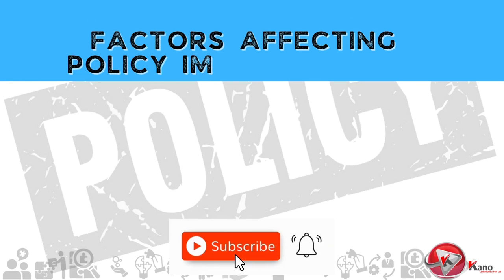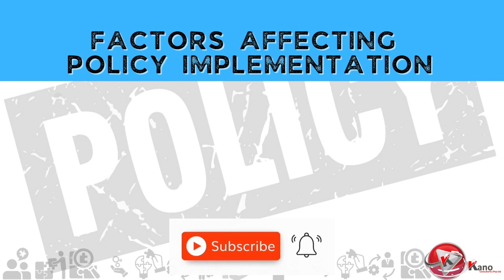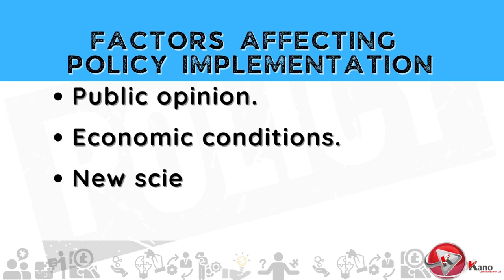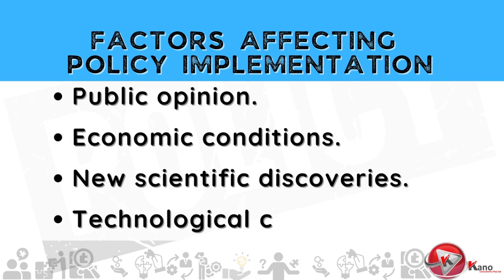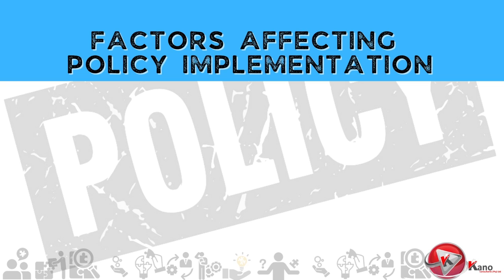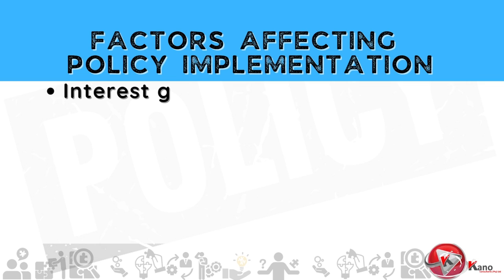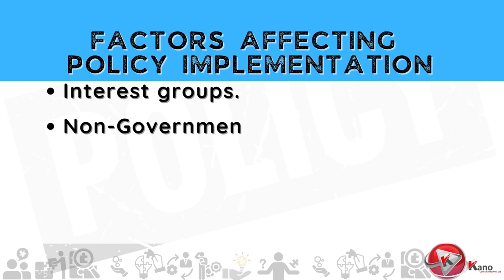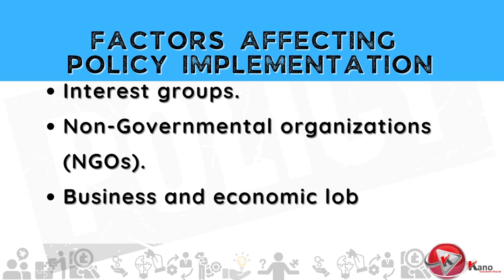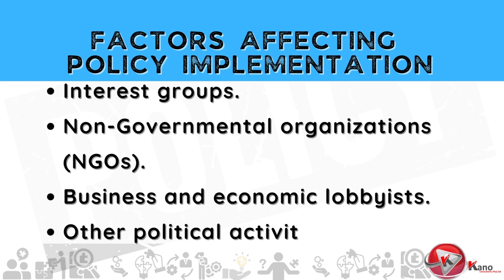Public policies are influenced by a variety of factors. In this next section, we discuss the various factors which may affect policy implementation. These factors include public opinion, economic conditions, new scientific discoveries, and technological changes. Other factors which may affect policy implementation include interest groups, non-governmental organizations, business and economic lobbyists, as well as other political activity.